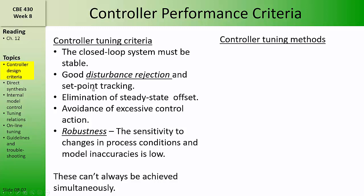Similarly, very tight control — that is, obtaining excellent disturbance rejection and setpoint tracking — may result in controller tuning parameters that are not very robust or that cannot tolerate changes to the operating conditions without becoming unstable. Good disturbance rejection and setpoint tracking may require that we tune a controller very close to a stability limit.